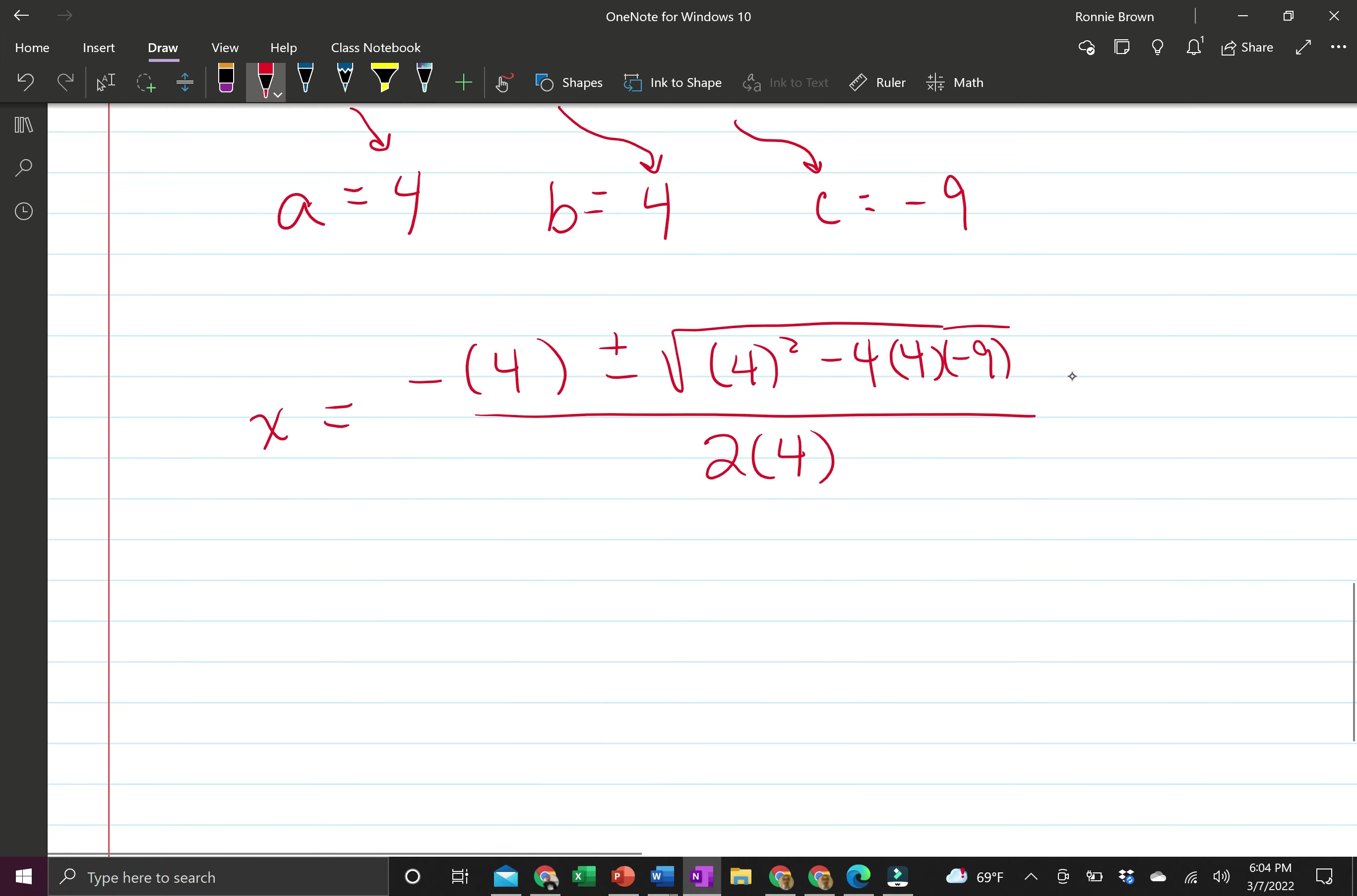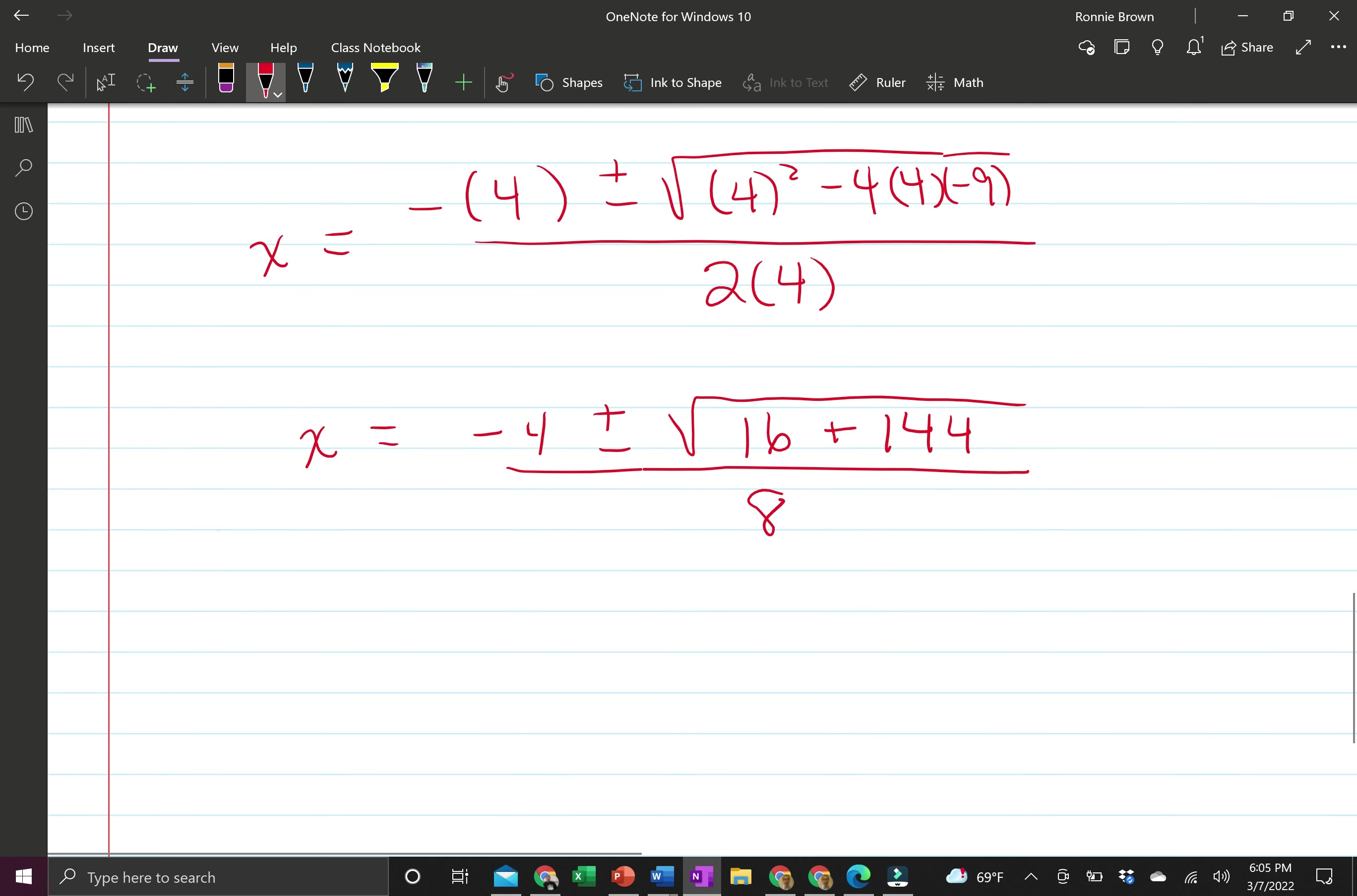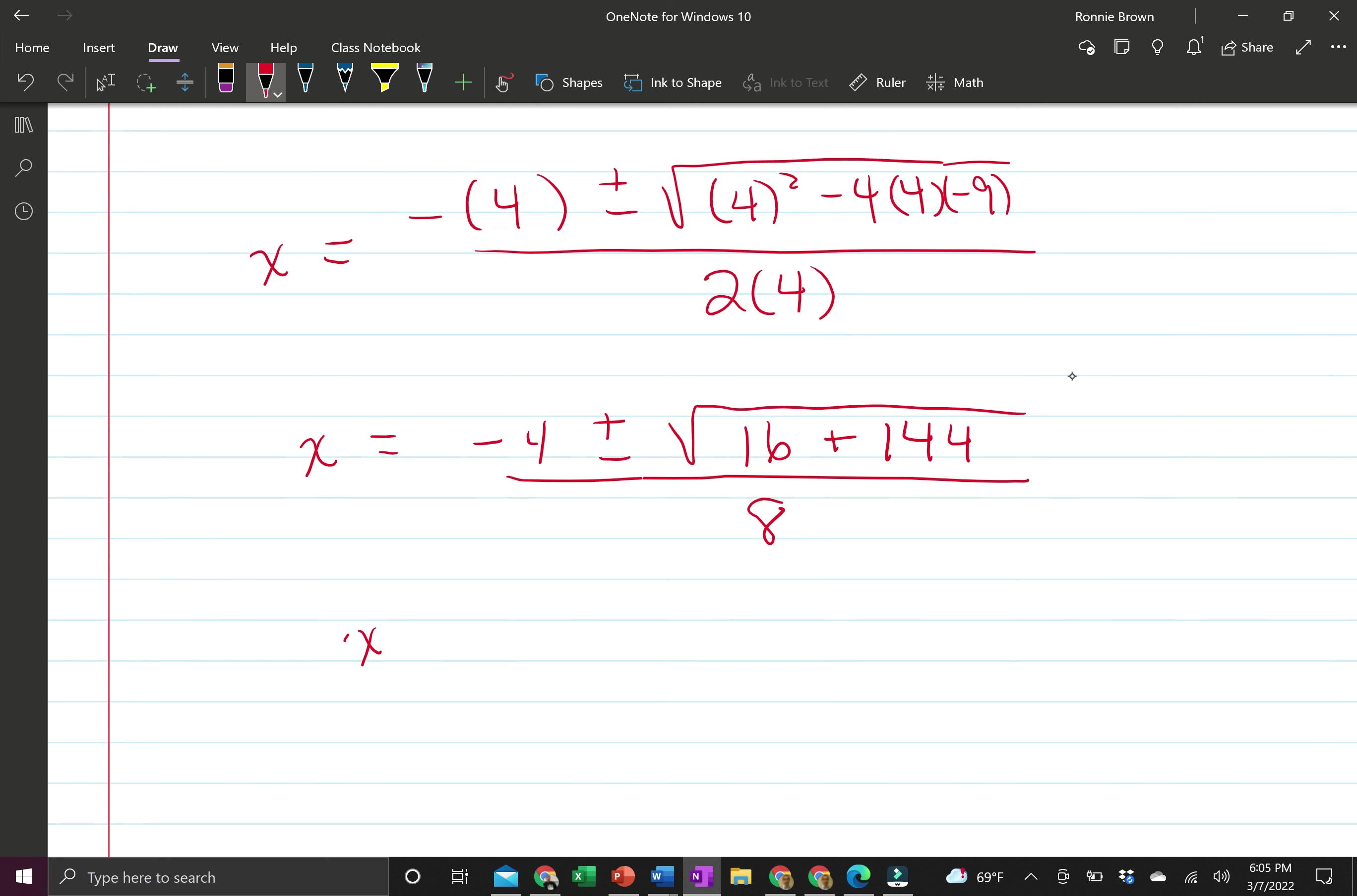Now it's just a matter of crunching some numbers. Negative on the outside of this 4 makes it negative 4, plus or minus 4 squared is 16. Here we have negative 4 times positive 4, which is negative 16. And then negative 16 times negative 9, that's going to get us a positive 144. And this is all over 8. So now we're just going slowly step by step. We can say negative 4 plus or minus, the 16 plus the 144 gets us 160, all divided by 8.